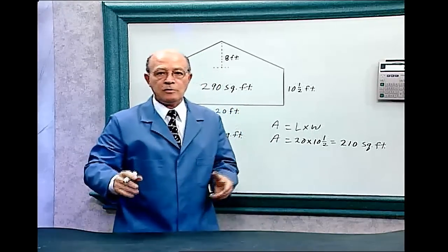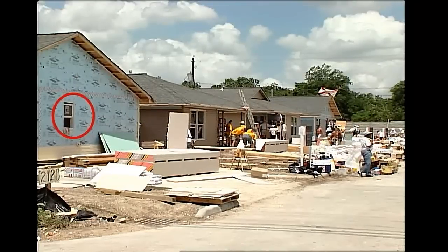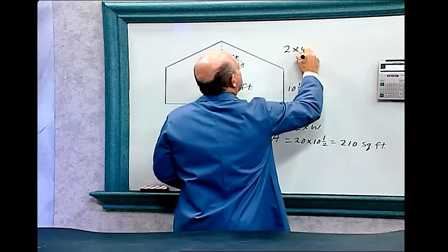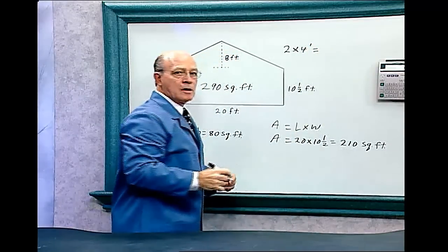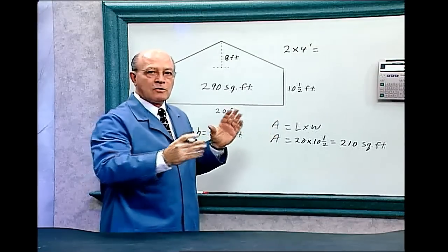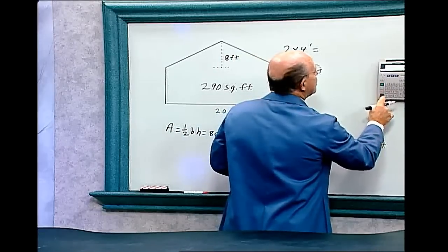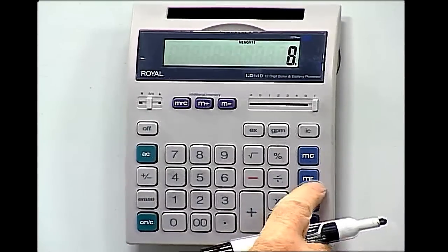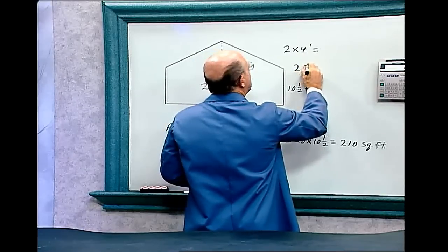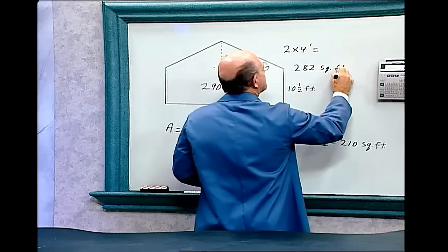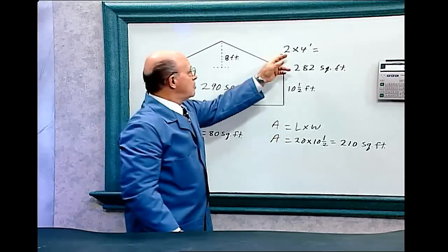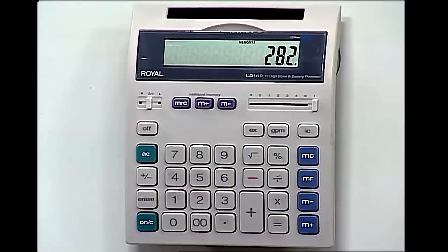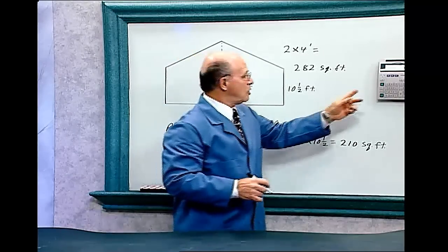Now, the building across the way has a window in it measuring two by four feet. We need to deduct that area from the side of the building. Two times four equals eight, subtracted from two hundred and ninety, gives us two hundred and eighty-two square feet. We could have done that in our head, but we want to show how to use the calculator's memory functions.